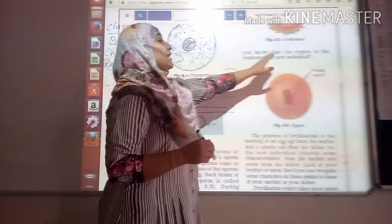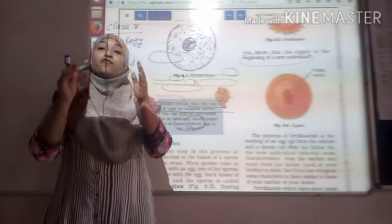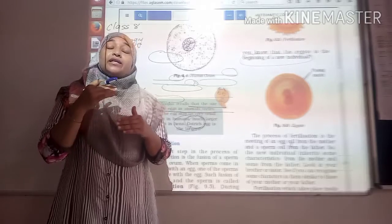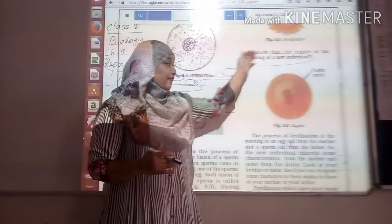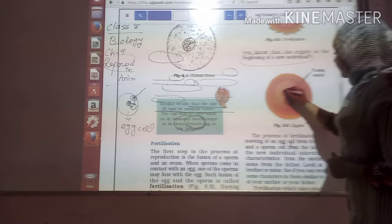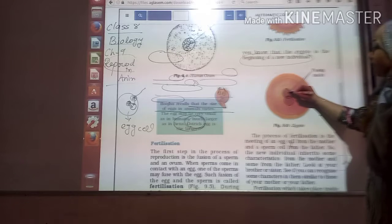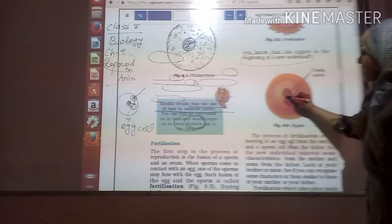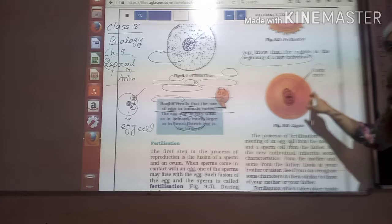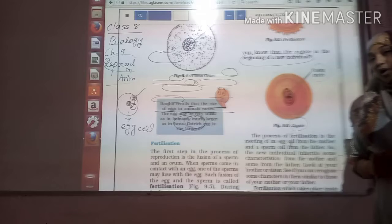The zygote is the beginning of the new individual. It is the very initial stage of each and every individual. You can see over here in this image that two nuclei are there - one nucleus is from the sperm and one is from the egg cell. They both fuse and then form a single nucleus. This whole stage is called zygote.